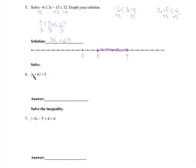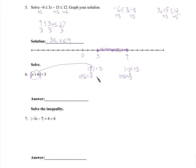For absolute value: I'm going to take the absolute value of some number and get 3. What can I take the absolute value of? The absolute value of 3 is 3, and the absolute value of negative 3 is also 3. So x plus 6 could equal 3, or x plus 6 could equal negative 3. Subtracting 6 from both sides gives x equals negative 3, or x equals negative 9. Both are possible solutions.